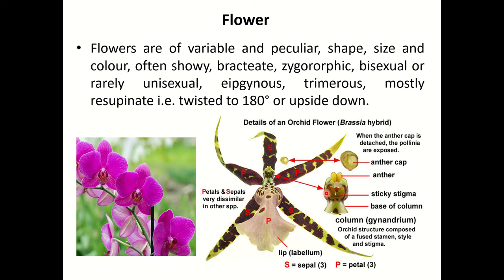Now look at the floral characters of Orchidaceae, which are very, very important. Flowers are variable and peculiar — very beautiful and brightly coloured. Shape, size and colour are very attractive, often showy, bracteate, zygomorphic, bisexual or rarely unisexual, epigynous, trimerous, mostly resupinate — that is twisted at 180 degrees or upside down. The inferior ovary makes it epigynous.